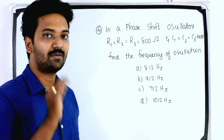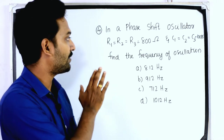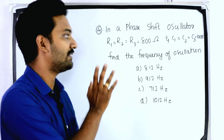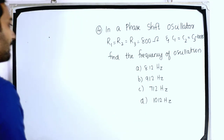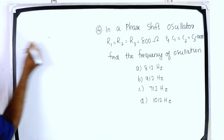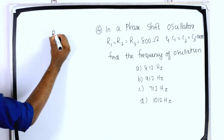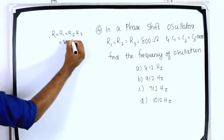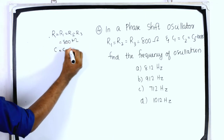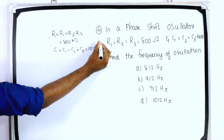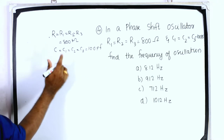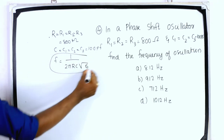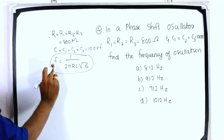Fourth question: in a phase shift oscillator, R1 = R2 = R3 = 800 ohm and C1 = C2 = C3 = 100 pF. Find the frequency of oscillation. We note R1 = R2 = R3 = 800 ohm and C = C1 = C2 = C3 = 100 pF.